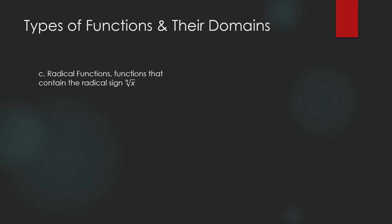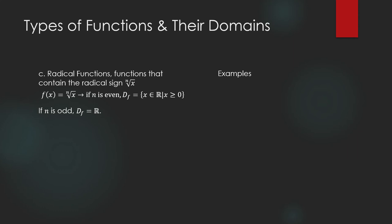Radical functions are functions that contain a radical sign, where n is the index of the radical. When the function is the nth root of x and n is even, the domain is the set of real numbers greater than or equal to zero, because the nth root of a negative number when n is even is undefined in the real numbers. When n is odd, the domain is the set of all real numbers.